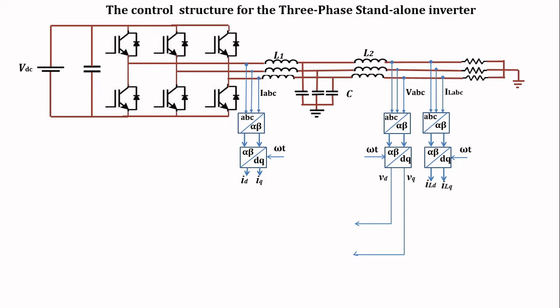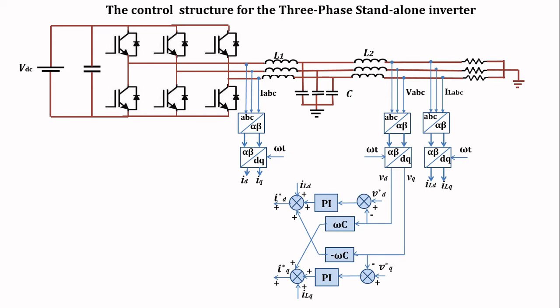The control loop has a voltage outer loop control and an inner current loop control. In the voltage loop, the load voltage VD and VQ are compared with the reference voltage VD and VQ to generate the error. Then the error is sent to the PI controller to get the reference current ID and IQ.